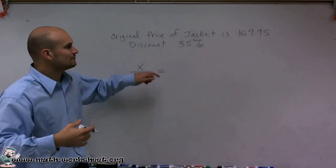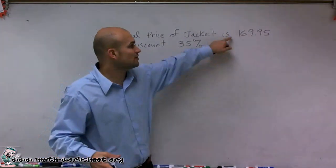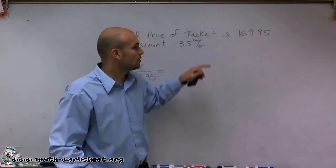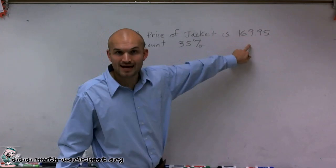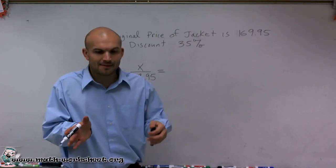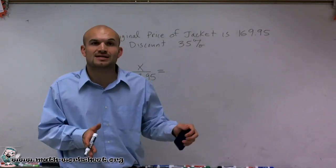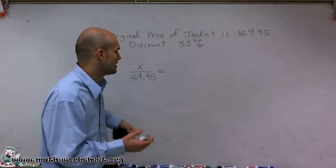But we're not looking for a jacket that is 35% of this price. We're looking for 35% off this jacket or 35% of this jacket subtracted from our total price. So if I'm going to discount it 35%, then what is my new discounted price going to represent?